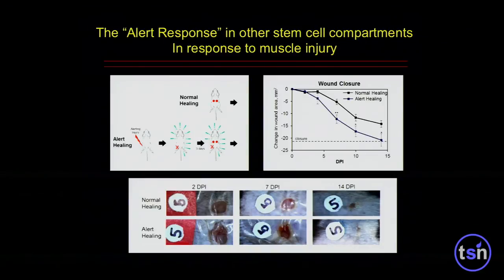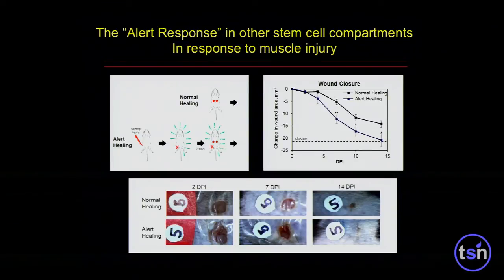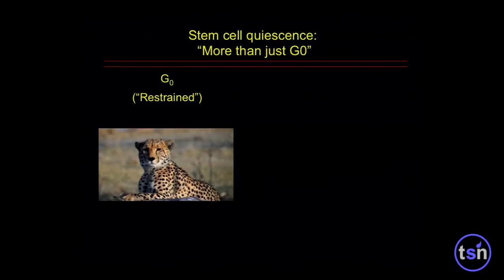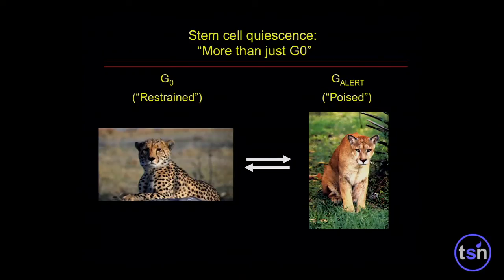Joe started to work on skin wound healing, which is a great system because you can see it so clearly. He produces two punch holes in the skin of an animal, either with or without a priming injury from the muscle, and finds that recovery is much more rapid in the alert condition. So skin wound healing is enhanced if there's a prior injury to the muscle. We've expanded this idea: if G0 is a restrained state, then G-alert cells are even more poised — much more able to respond to a systemic signal to enter the cell cycle and repair muscle.